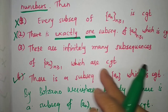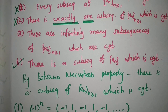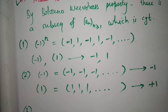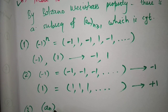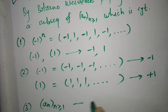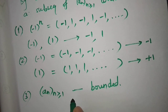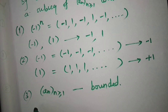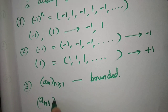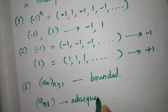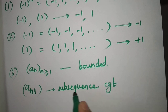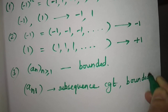Now for option 3: there are infinitely many subsequences of a_n which are convergent. By option 4, since a_n is bounded, there is a convergent subsequence — let us denote it a_{n_1}. This subsequence a_{n_1} is also bounded because the original sequence is bounded.